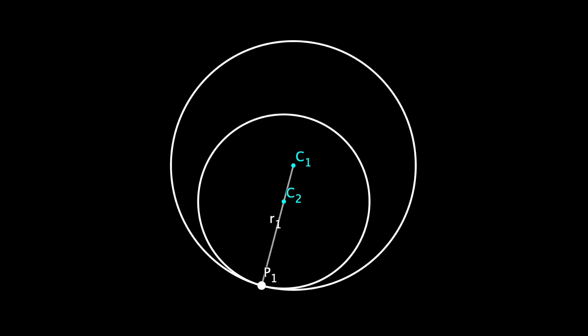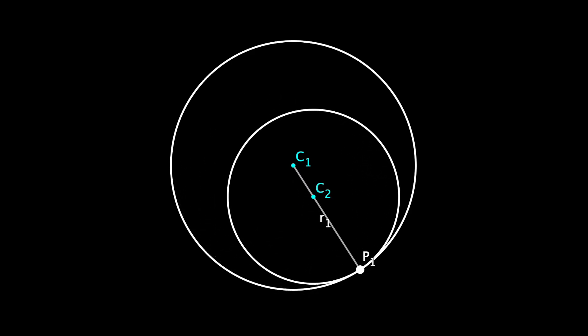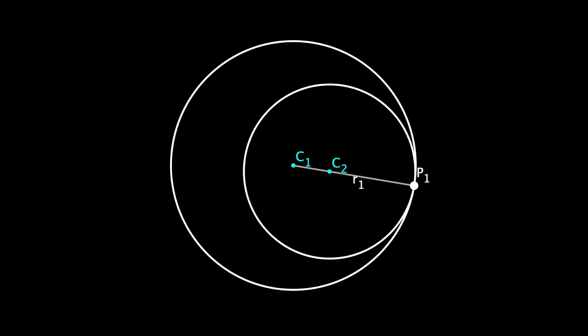If we move point p1 around the first circle, we obtain the first part of the animation that we are looking for.